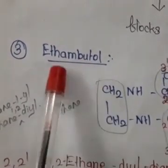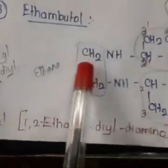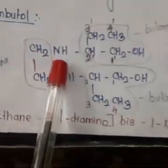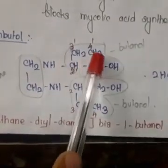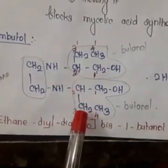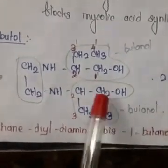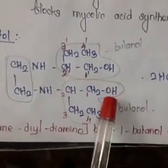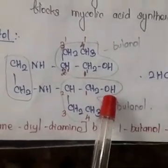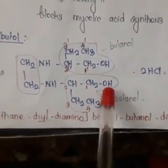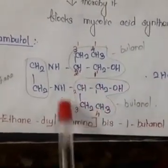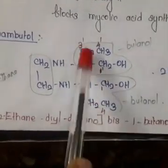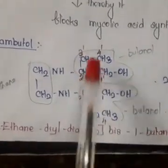Looking at the structure: CH2-NH-CH-CH-CH2OH with CH2CH3, and the same on the other side: CH2-NH-CH-CH2CH3-CH2OH. Since it has an OH group it can be considered an alcohol. It has four carbons, making it butanol. There are two butanol groups present.